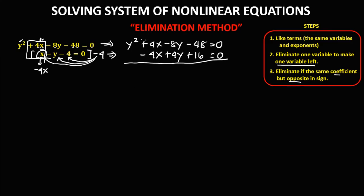Now add these two equations. Observe that we have positive 4x and negative 4x, so we can eliminate x. Simplifying: bring down y squared. Negative 8y and positive 4y gives negative 4y. Then negative 48 and positive 16 gives negative 32, equals 0.